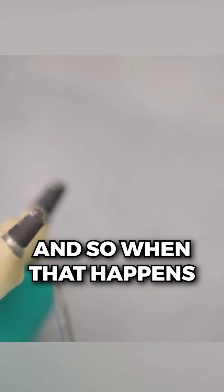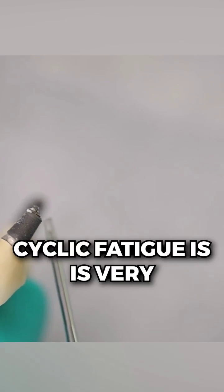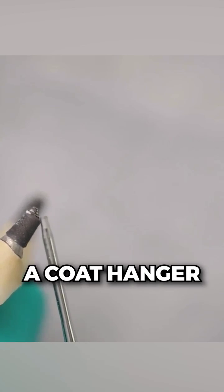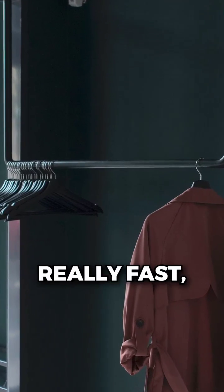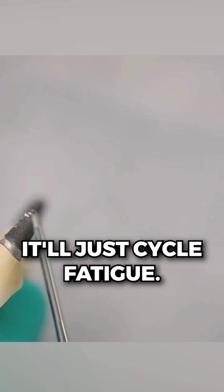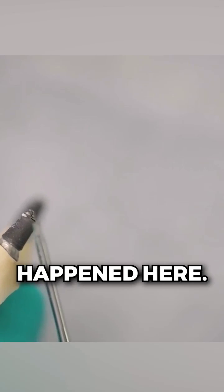And so when that happens, over time, you have what's called cyclic fatigue. Cyclic fatigue is very easy to explain. If you've ever had a coat hanger and you want to break the coat hanger in half, you just bend it back and forth really fast. It'll break right in half. It'll just cycle fatigue. That's what happened here.